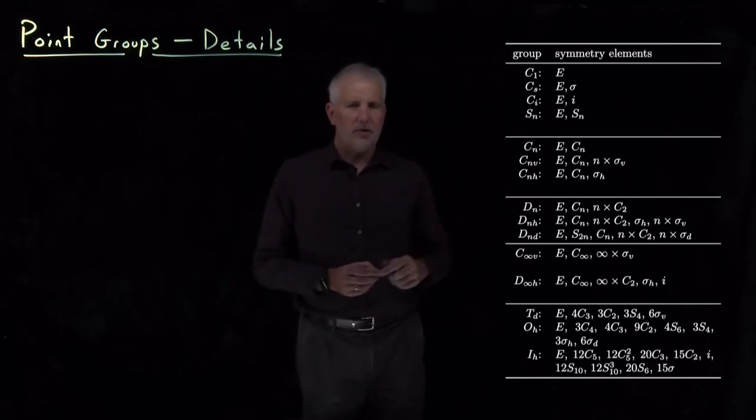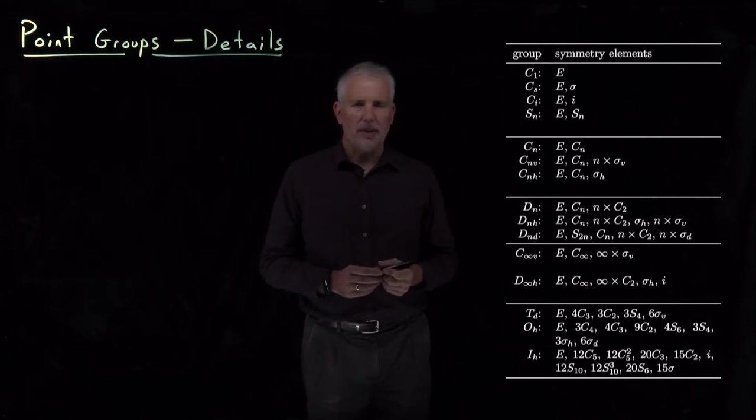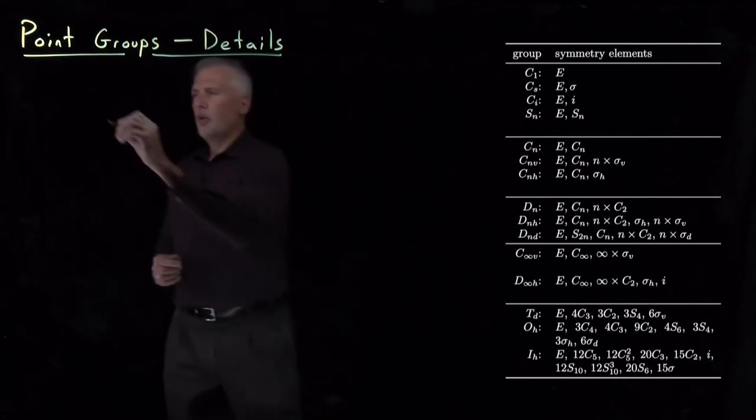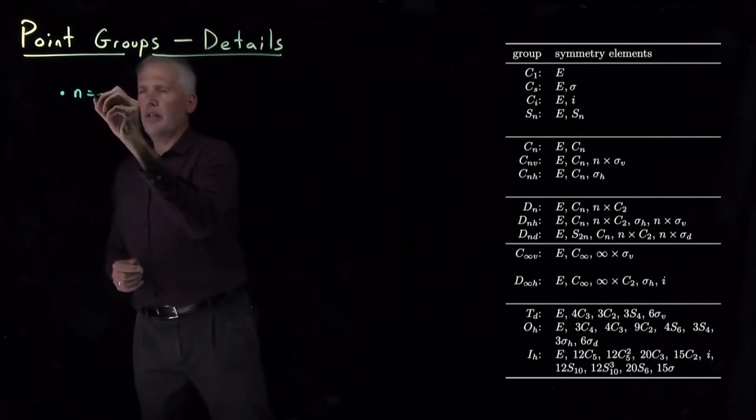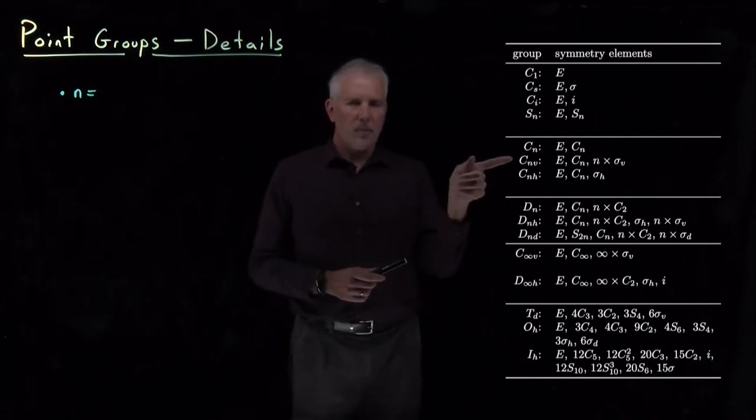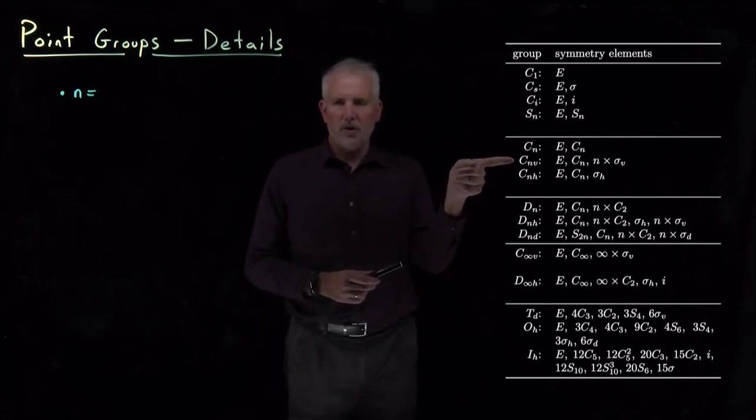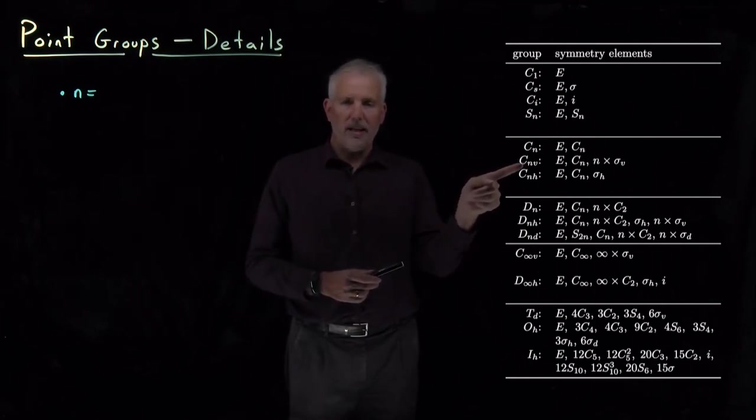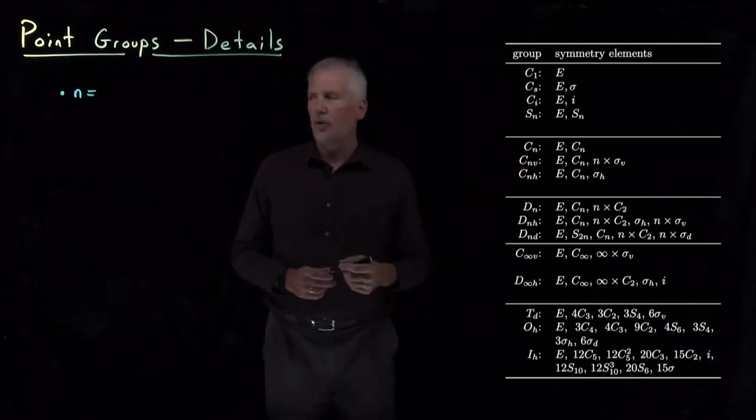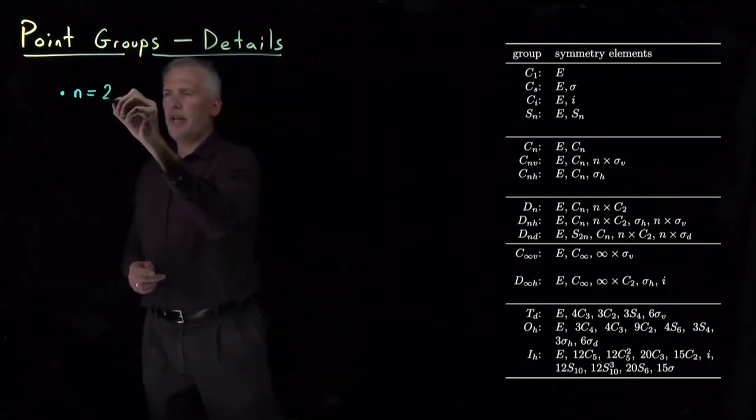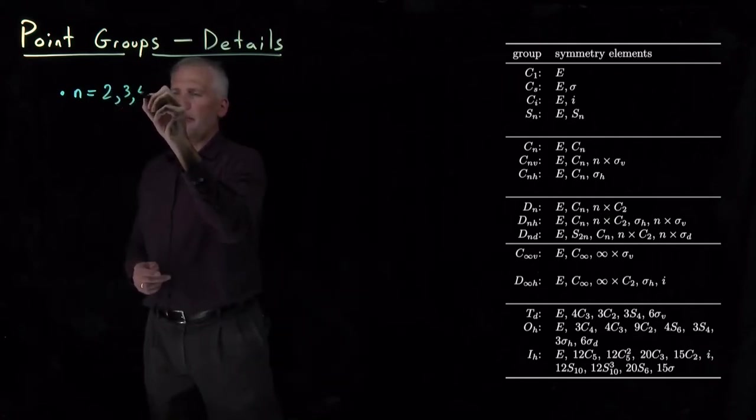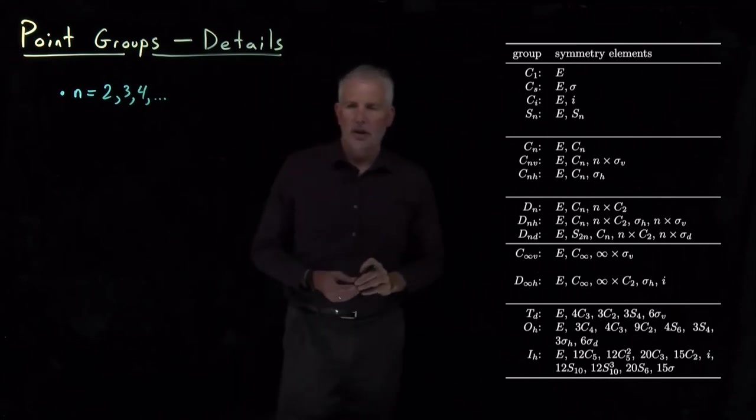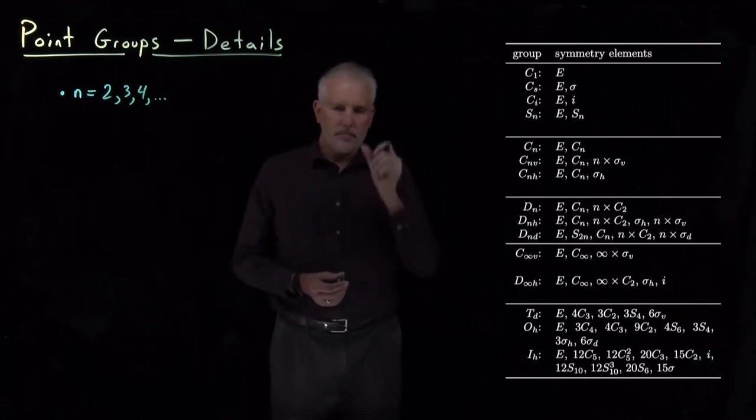A few features of this chart deserve some extra comment. One of them we've already seen is that this chart involves some shorthand. We've seen the C2V point group. There's also a C3V and a C4V point group. This N in many of these lines stands for an integer. You're never going to have N equal 1, but you could have N equal 2 or 3 or 4, any integer 2 or larger.